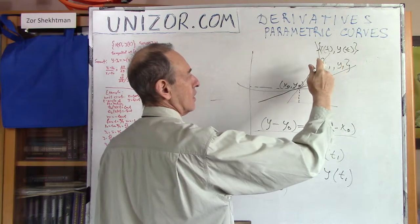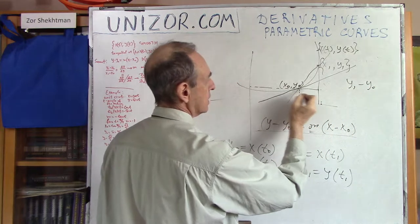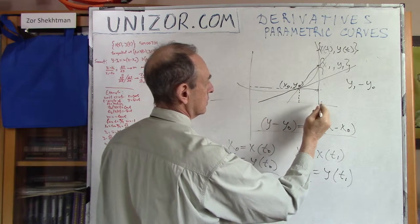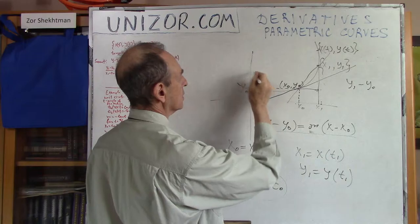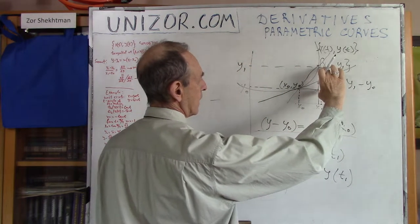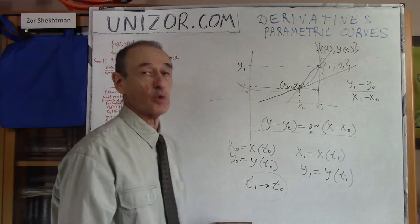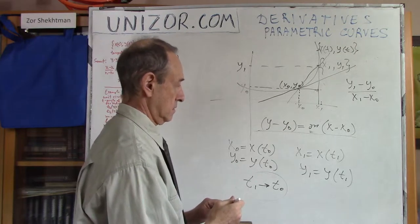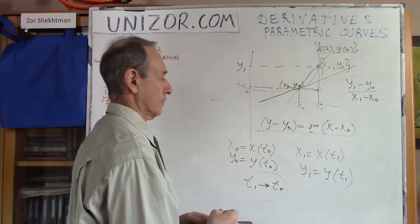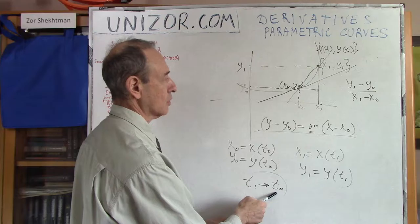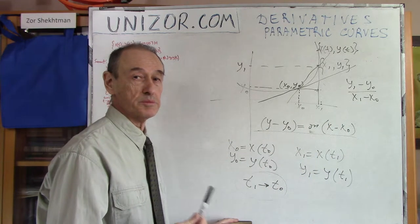So, if I would like to know the slope of the tangential line, I can get the slope of the secant and take the limit as t1 goes to t0. What is the slope of the secant? If we have two points, we can determine the slope very easily. The slope is y1 minus y0 divided by x1 minus x0. What happens when t1 gets closer to t0? Well, both numerator and denominator will be infinitesimal, so we don't yet know what the ratio will be.